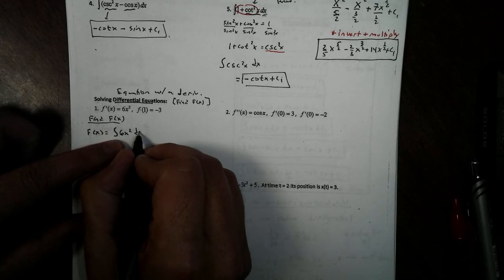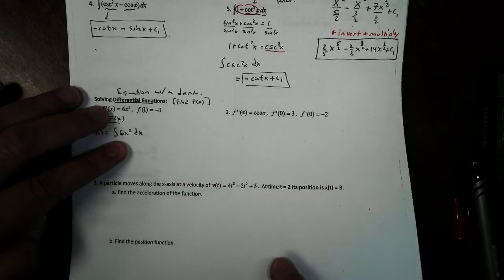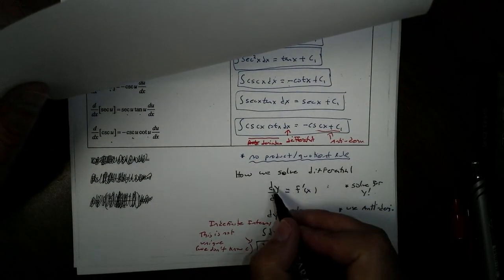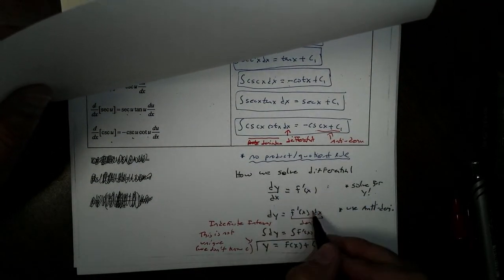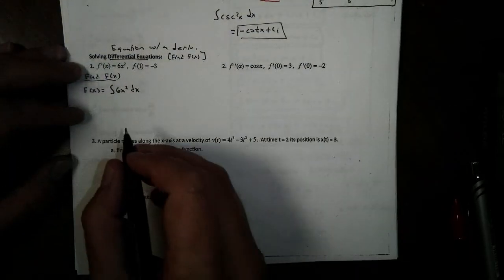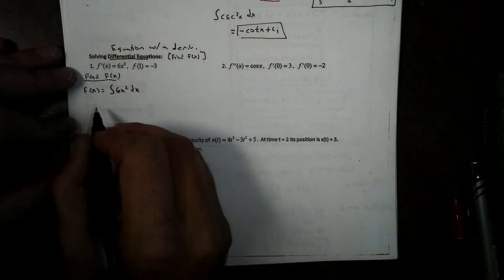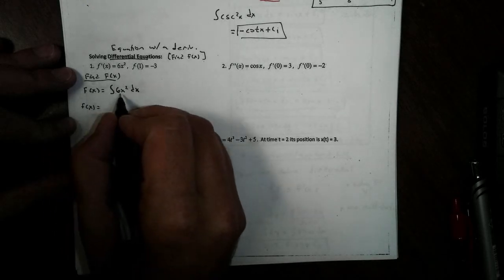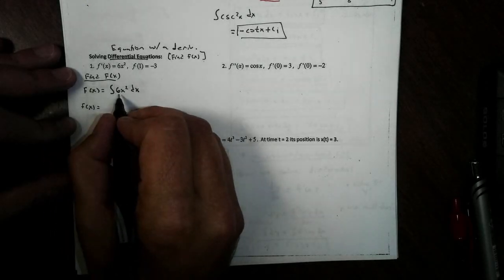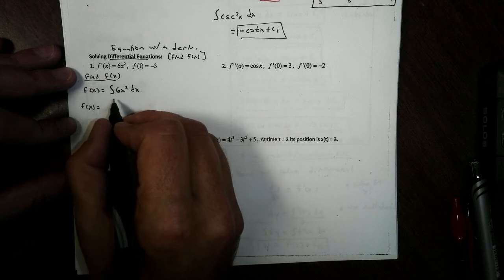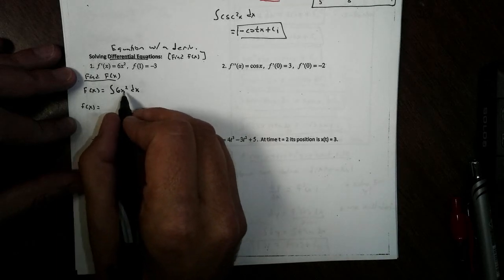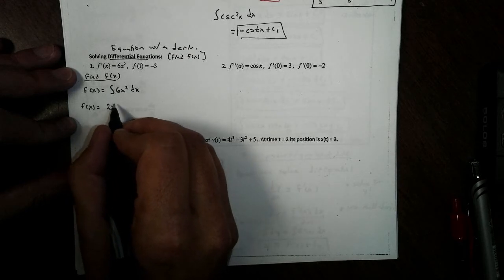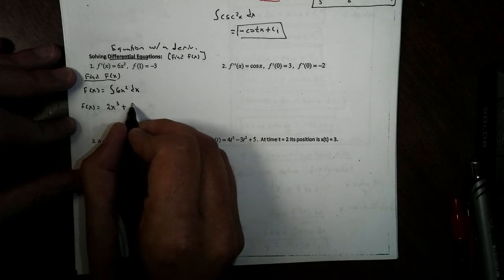Now, don't forget the dx. If you're curious about where the dx came from, it came from right here when we solved the differential. This is really dy dx, and we cross-multiplied there. When we solve for our function, we will get f of x equals this becomes 6x cubed over 3, or 2x cubed plus c1.